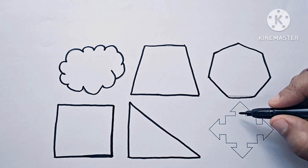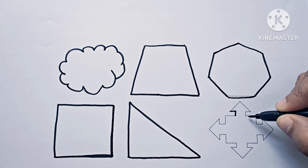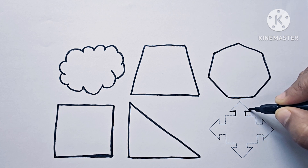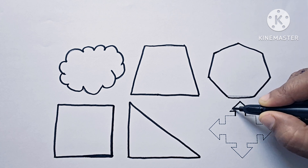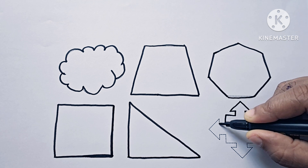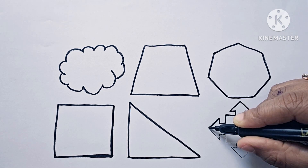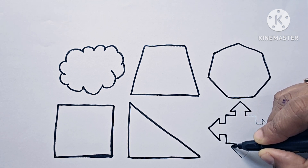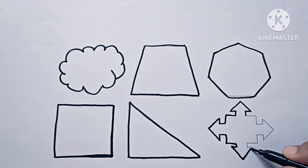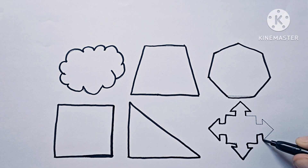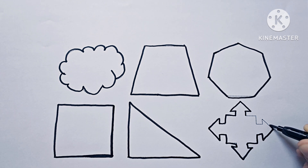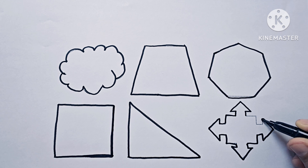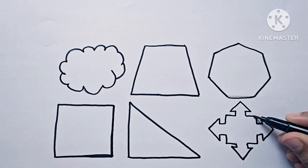This is a symbol. This is a quad arrow callout. This shape is a quad arrow callout — it is a symbol.